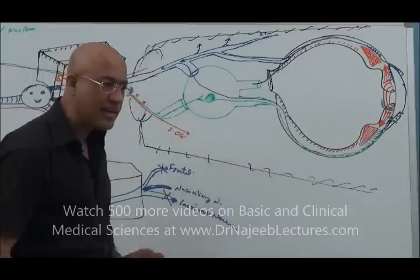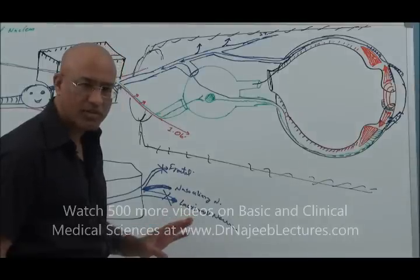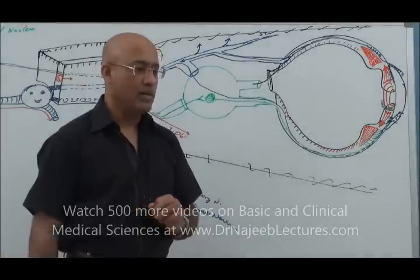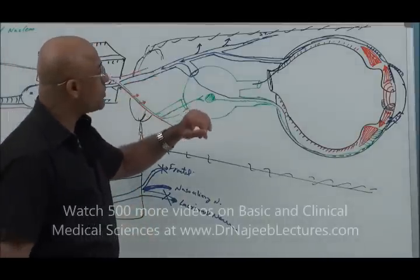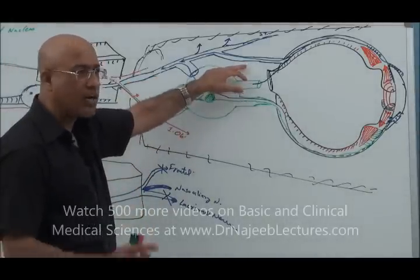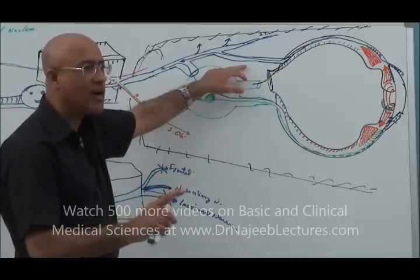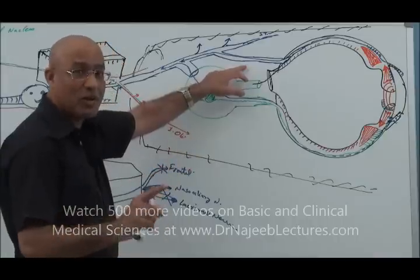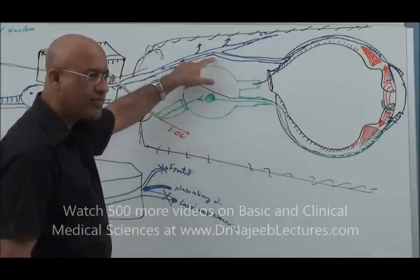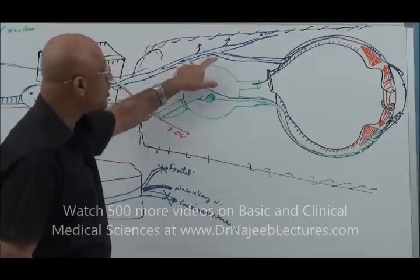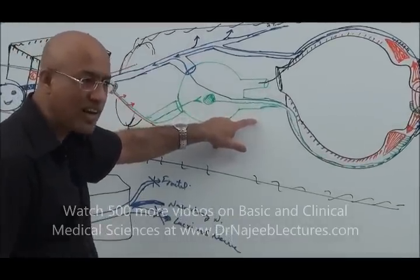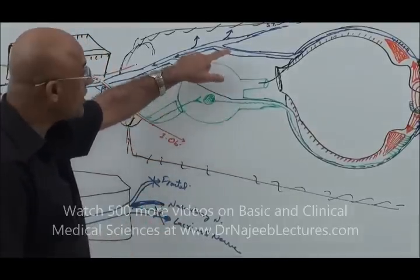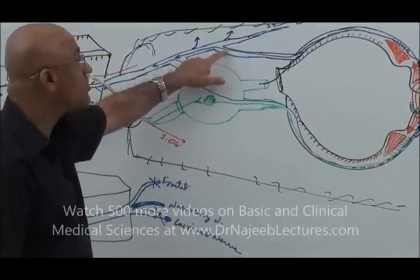To clarify the question about the difference between short and long ciliary nerves: long ciliary nerves are longer, and short ciliary nerves are shorter. More importantly, long ciliary nerves are branches of the nasociliary nerve, while short ciliary nerves are branches of the ciliary ganglion. Both carry sensory fibers, but long ciliary nerves are purely sensory branches of the nasociliary nerve, while short ciliary nerves emerge from the ciliary ganglion.